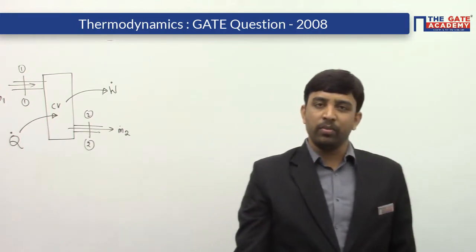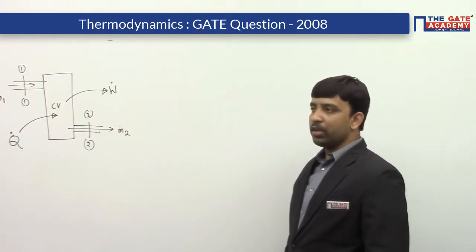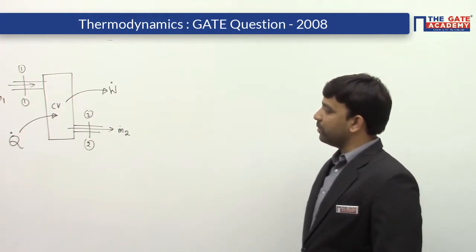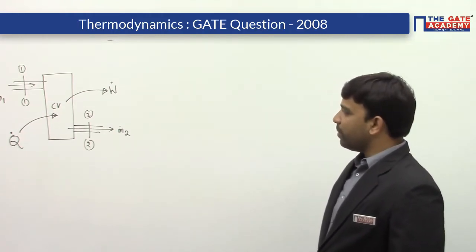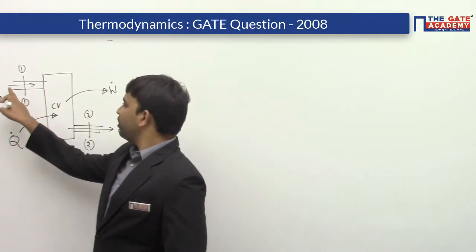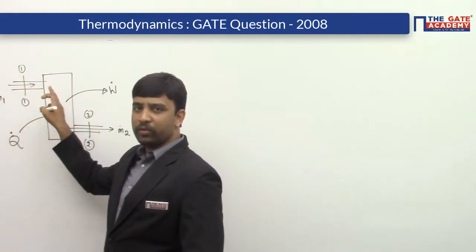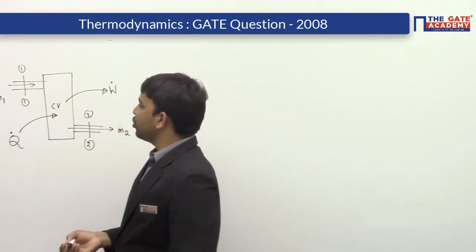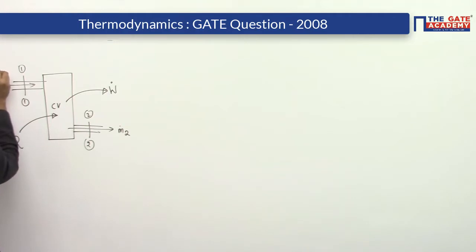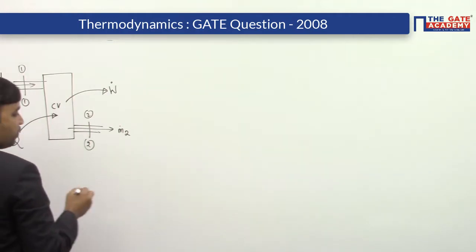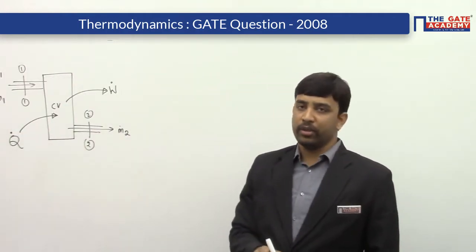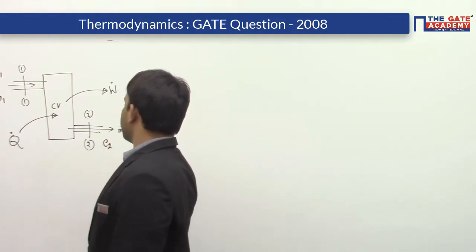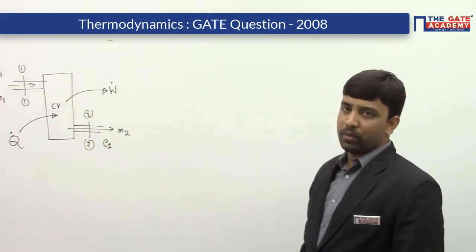w dot is nothing but dW/dt and q dot is nothing but dQ/dt. The fluid stream entering the control volume will have some amount of energy. I am assuming E1 is the specific energy of that particular flowing fluid. E2 is the specific energy possessed by the fluid that is coming out from the control volume.